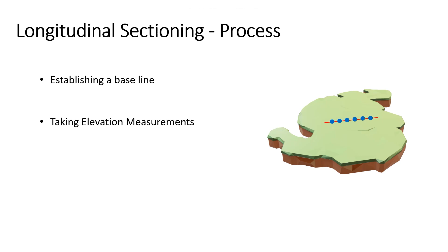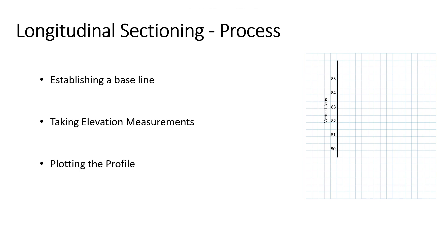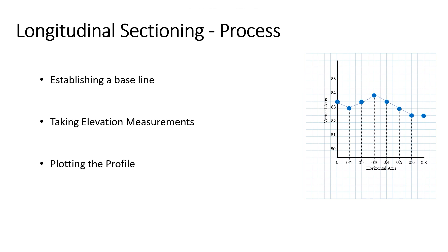Measurements are recorded using a leveling instrument or a total station to create a profile of the land. The last step is to plot the profile — the collected elevation data is plotted on graph paper or entered into specialized software to create a longitudinal section. The resulting graph shows the variations in ground level along the surveyed line.